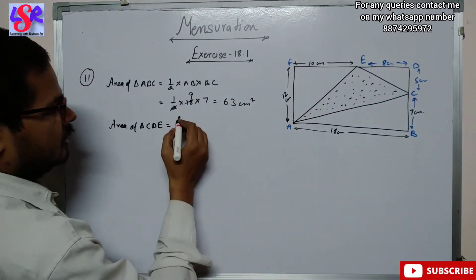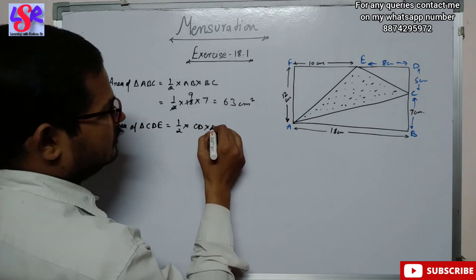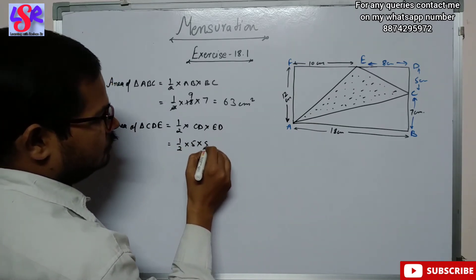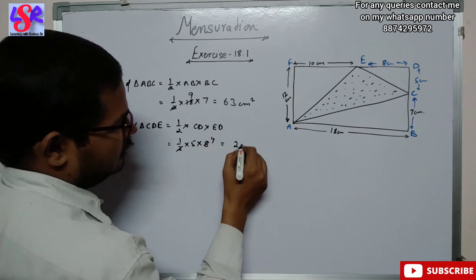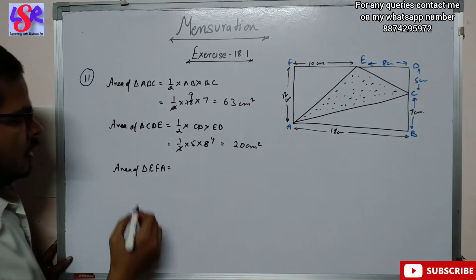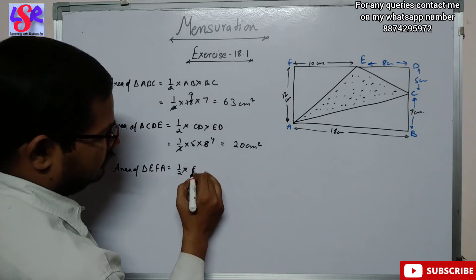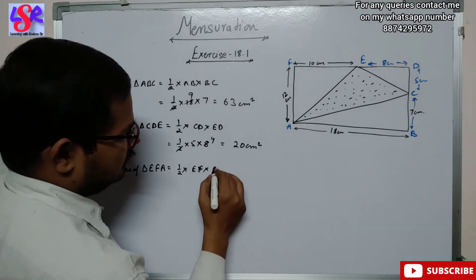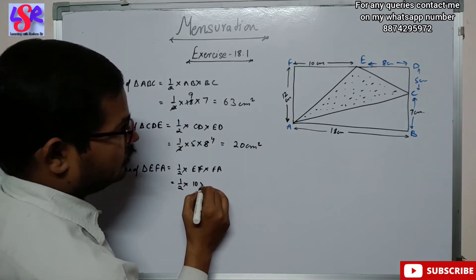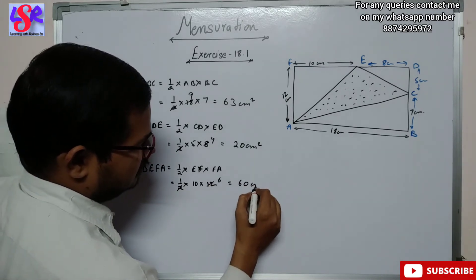Now we calculate the area of triangle CDE: 1/2 into base CD into height ED, which is 1/2 into 5 into 8, giving 20 centimeter square. Then the area of triangle EFA equals 1/2 into base EF into height FA, which is 1/2 into 10 into 12. Cancelling gives 60 centimeter square.